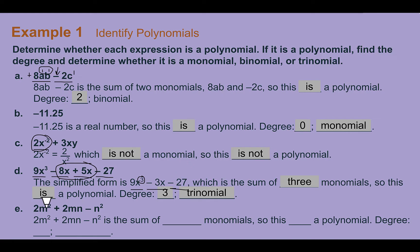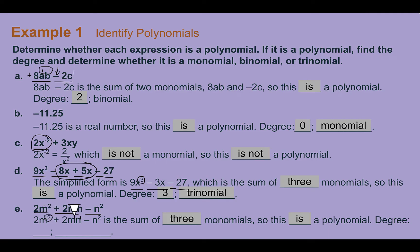Part E: 2m squared plus 2mn minus n squared. This is the sum of three monomials, so it's a polynomial. The highest degree: 2m squared has degree 2, 2mn has degree 1 plus 1 equals 2, and n squared has degree 2. So this is a second-degree or quadratic trinomial.